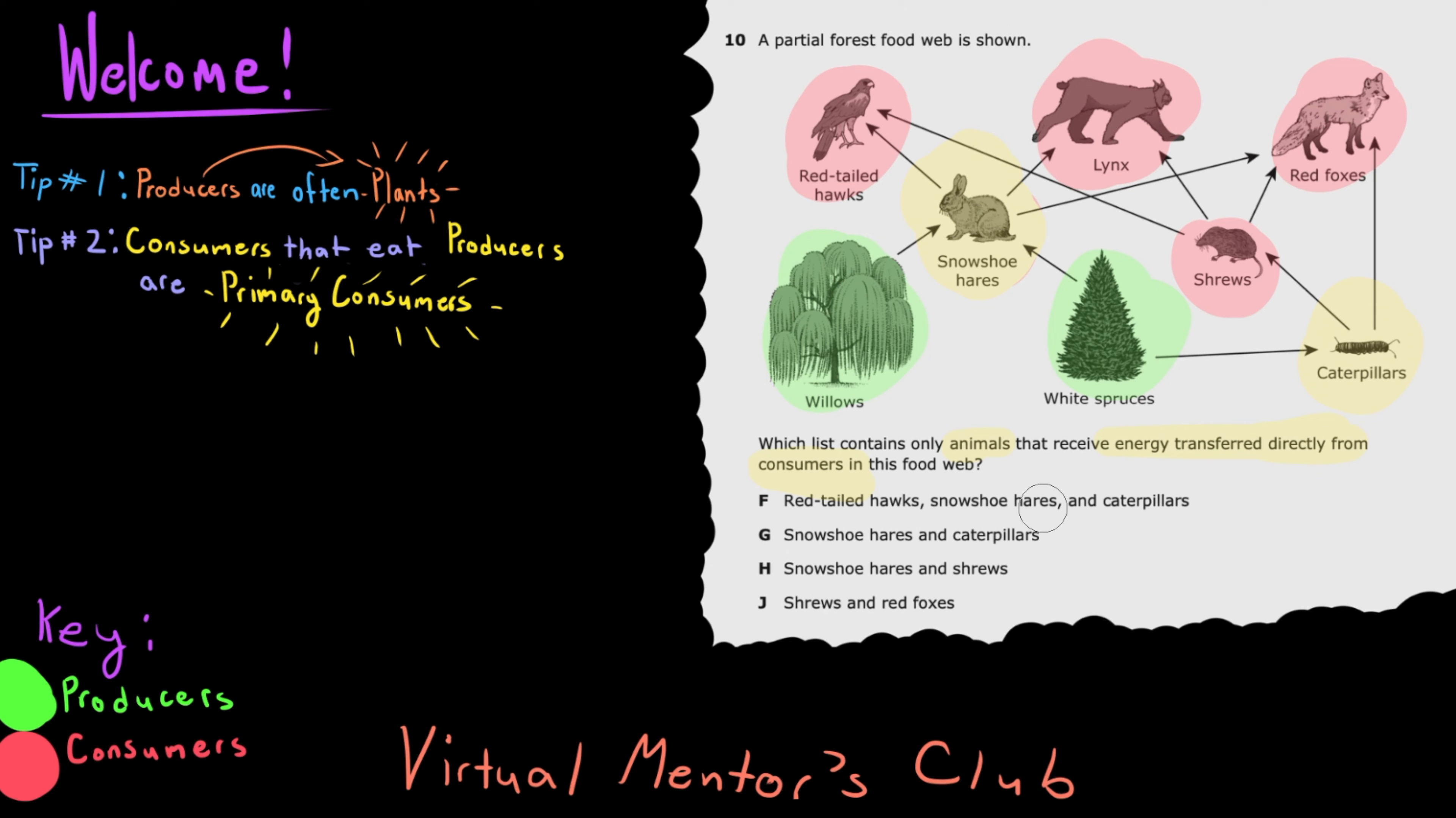option F is wrong because it includes snowshoe hares. Option G is wrong because it only includes primary consumers, snowshoe hares and caterpillars. Option H is wrong because it once again includes snowshoe hares, a primary consumer.